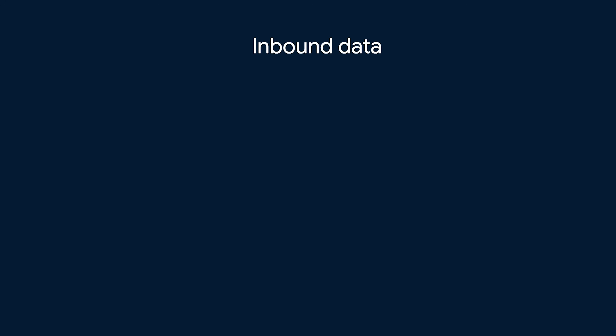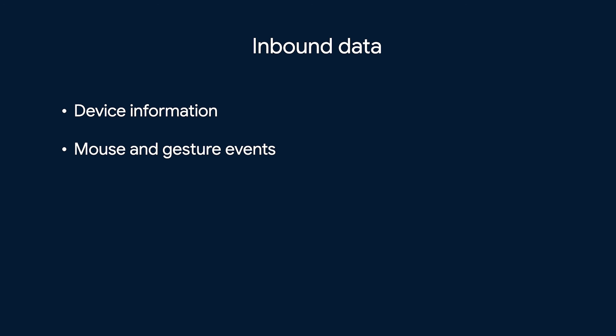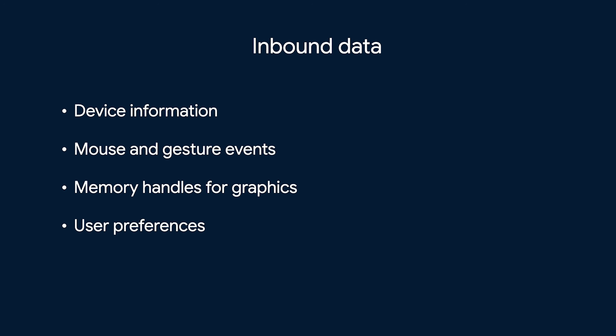Back to the Flutter engine. Maybe you've heard that Flutter has this mysterious engine thing and that it's not written in Dart. The engine is Flutter's connection to the outside world for both stuff coming in and stuff going out. Examples of stuff coming in include device information, mouse and gesture events, memory handles for graphics, user preferences like localization, text scaling, or system settings like light mode versus dark mode, and also fundamental details like which graphics engine is being used — Vulkan, Metal, OpenGL, or others.